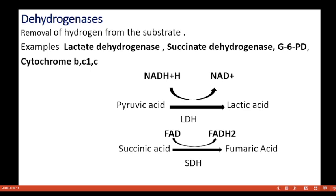Dehydrogenases — removal of hydrogen from the substrate. Examples include lactate dehydrogenase, succinate dehydrogenase, glucose-6-phosphate dehydrogenase, and cytochrome BC1C.